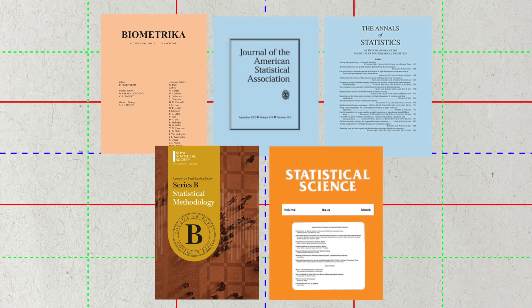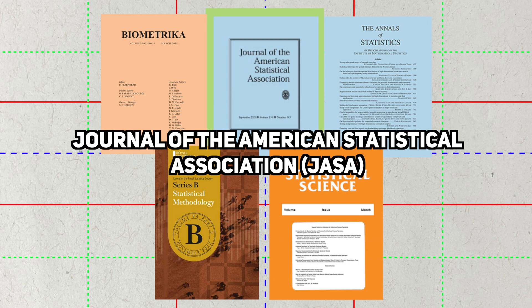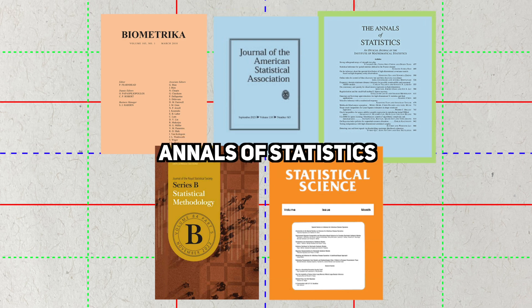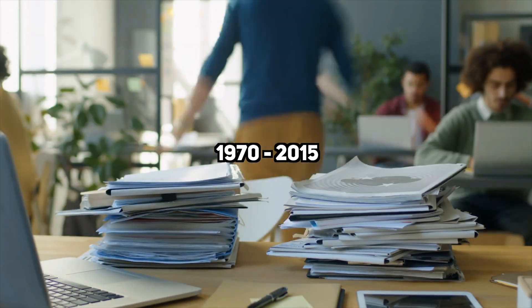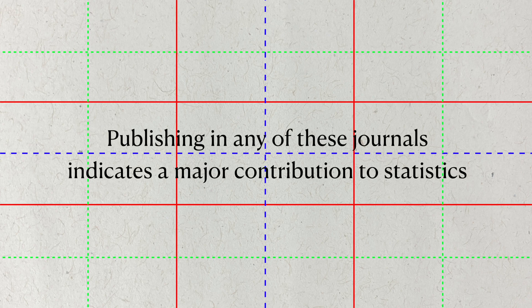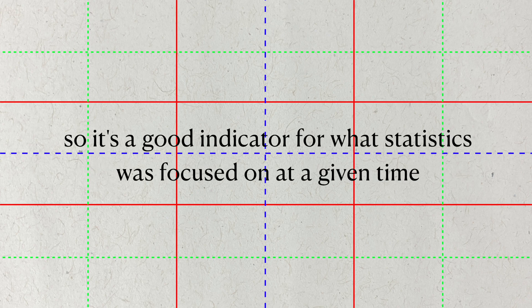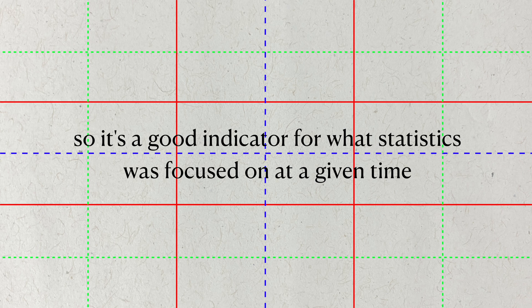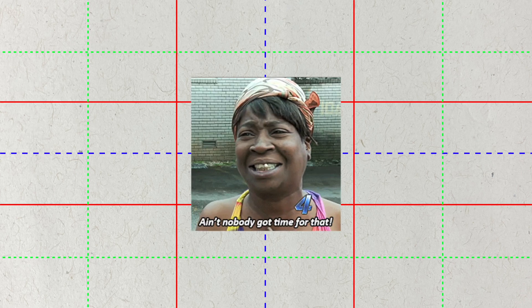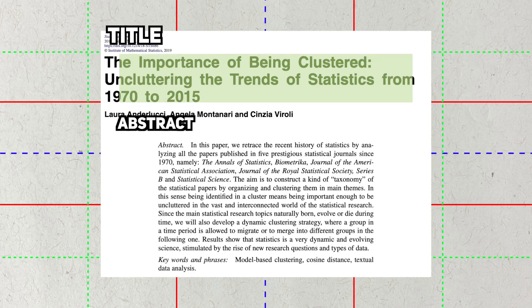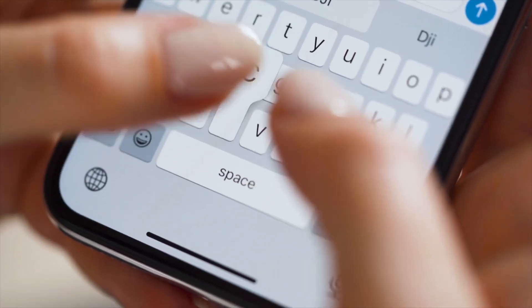The authors gathered data from five of the most prestigious journals in statistics: Biometrica, the Journal of the American Statistical Association (or JASA), the Annals of Statistics, the Journal of the Royal Statistical Society Series B, and Statistical Science. They gathered all the manuscripts from these journals published between 1970 and 2015. To publish in these journals is to publish something meaningful to the field of statistics, so it's a perfect source for understanding what the field was focused on at a given time point. In total, they gathered 15,472 articles. But like many statisticians before them, no one has time to read all of those articles — instead, the authors only use the titles and abstracts. So they dealt with text data in the end.